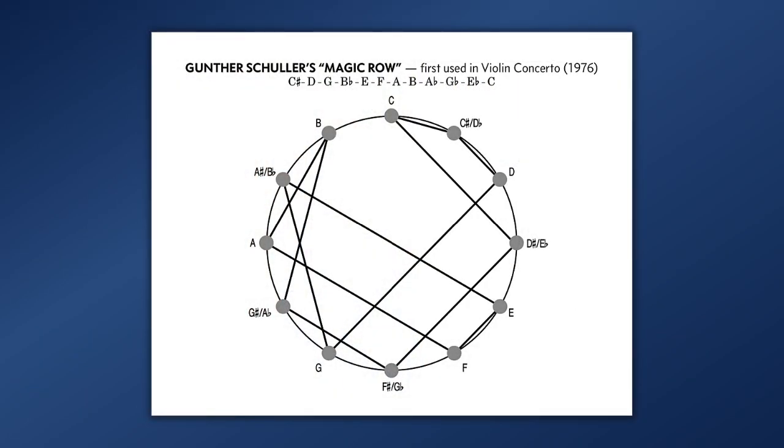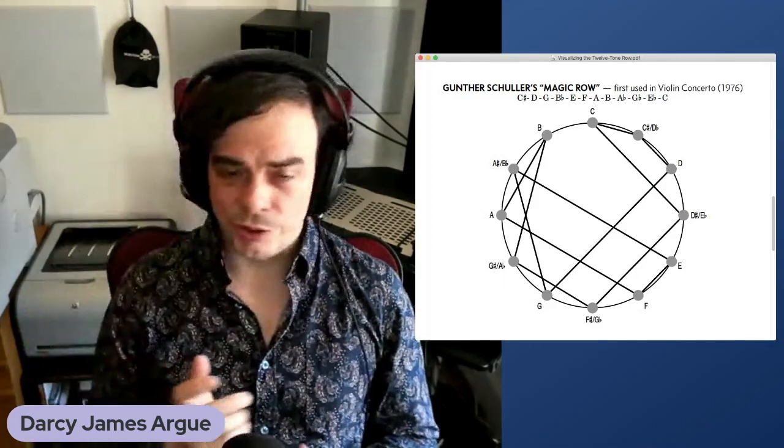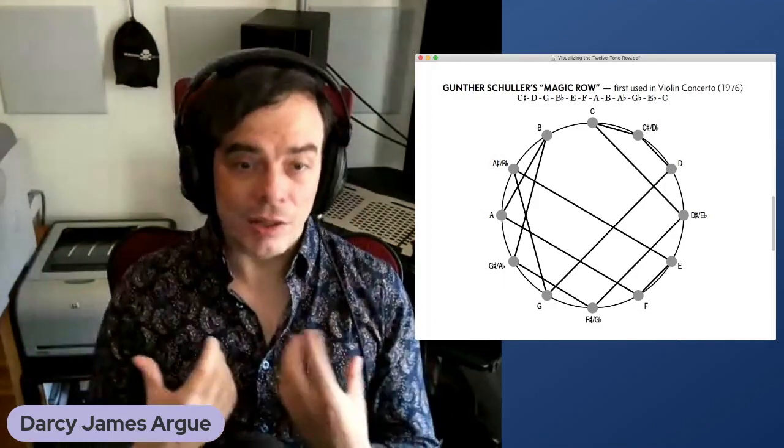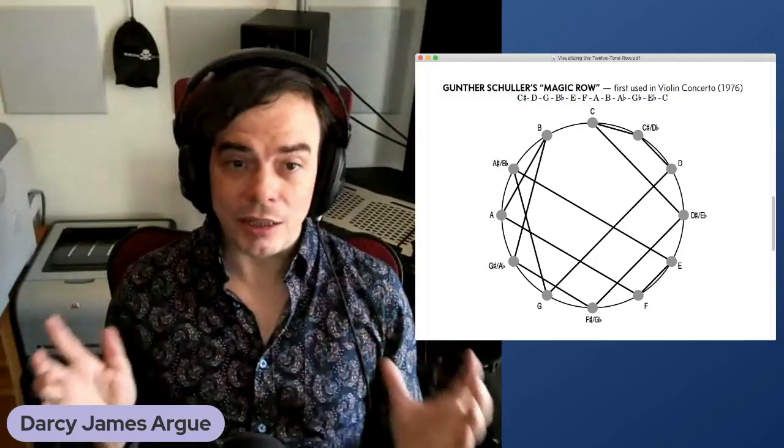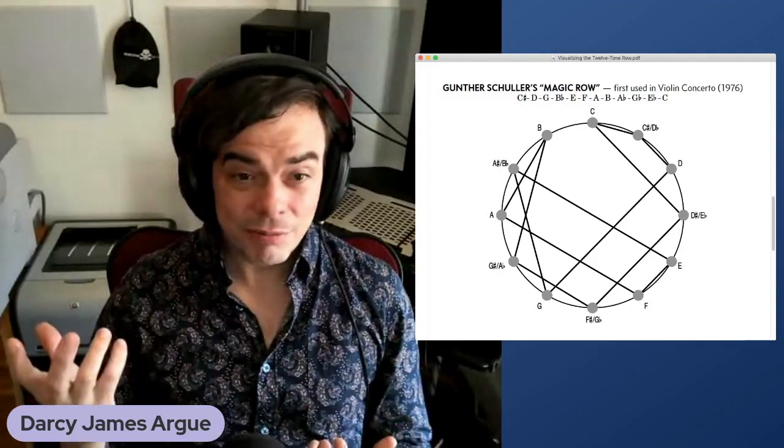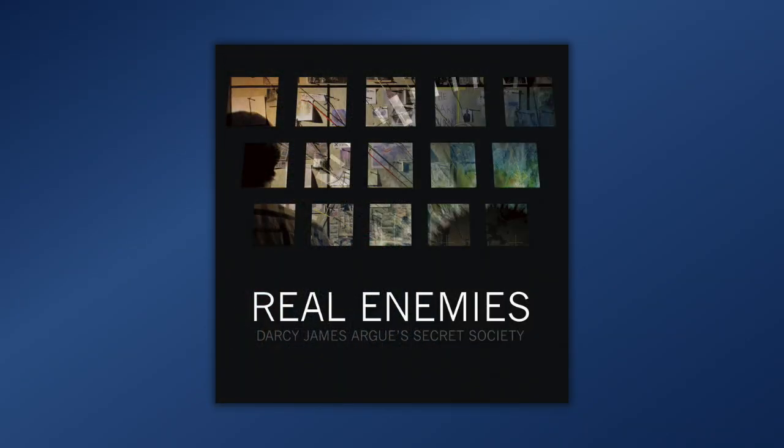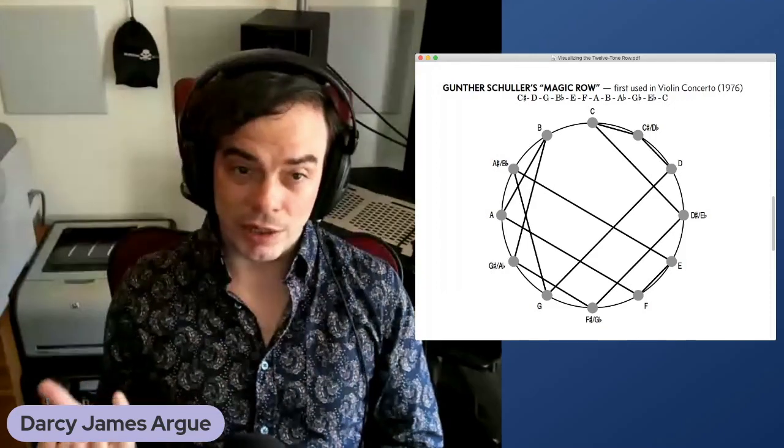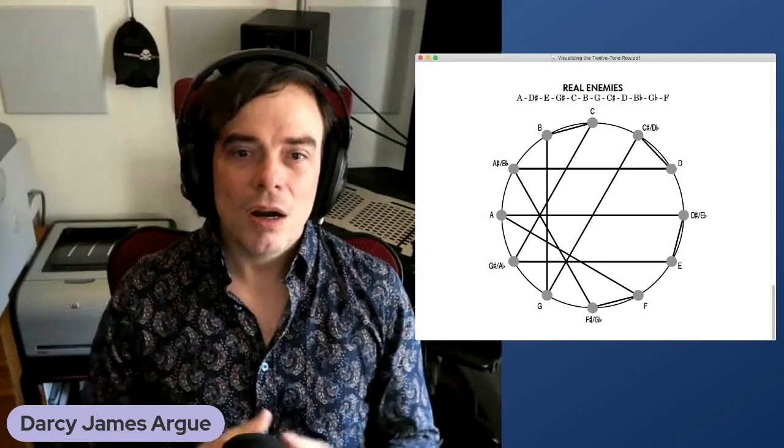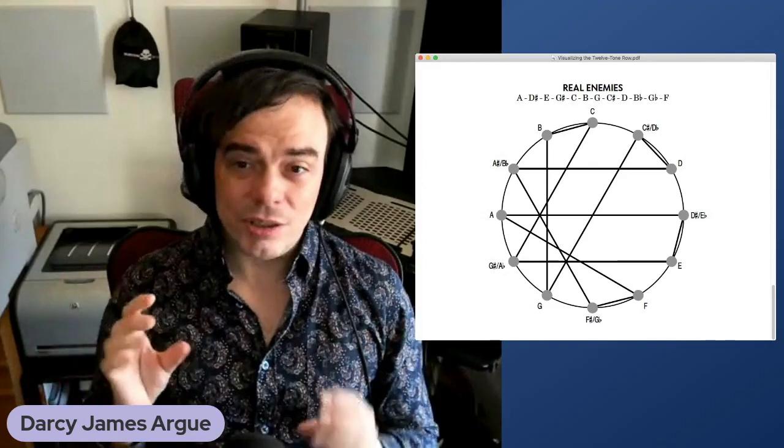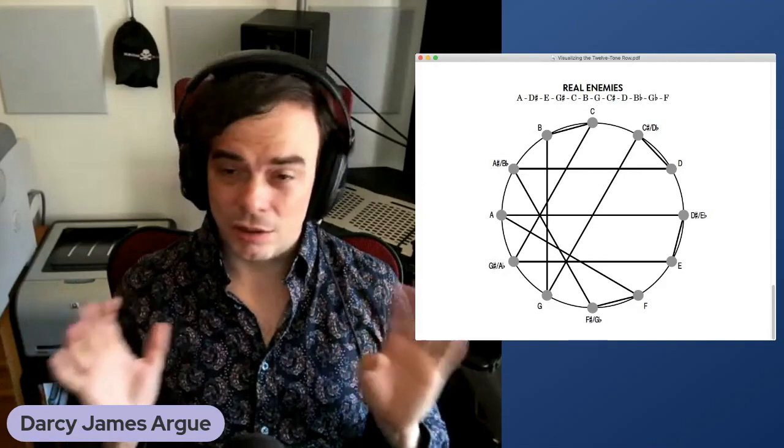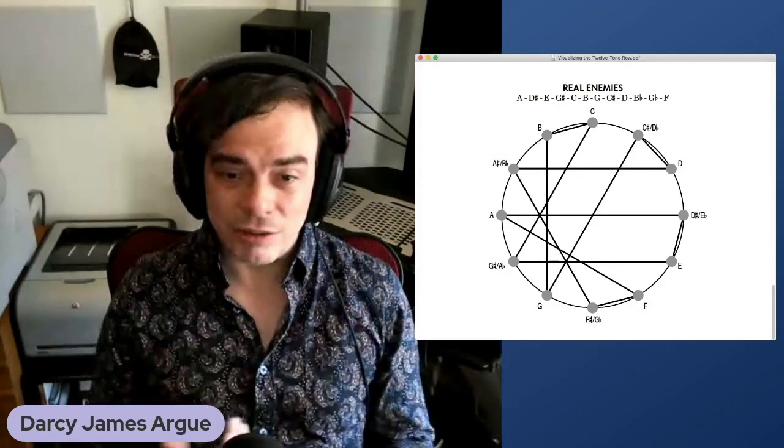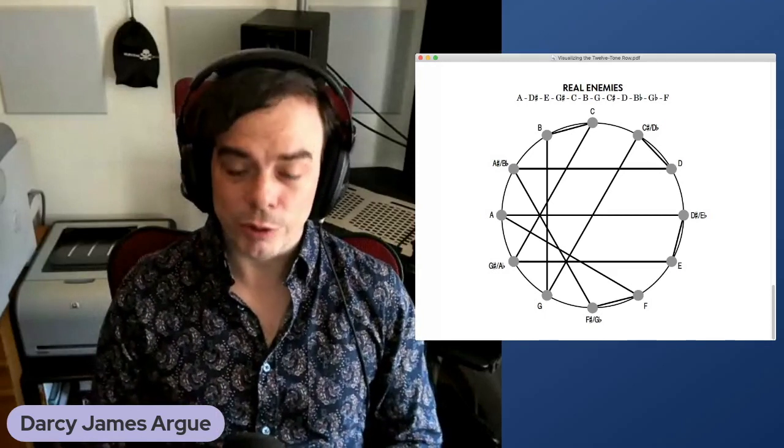So I find this method of visualizing a 12 tone row around a pitch circle to be extremely helpful as a composer. And it's a technique that I used in an 80 minute 12 tone piece called Real Enemies, that I wrote in 2015. It is a piece about conspiracy theories. So of course it uses 12 tone techniques throughout. And let's take a look at the row that I used for Real Enemies. So as you can see right away, this row has a lot of characteristics that make it very distinct from the other rows we've looked at. I'll just play it for you now.